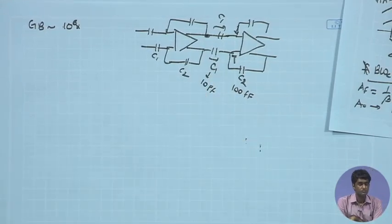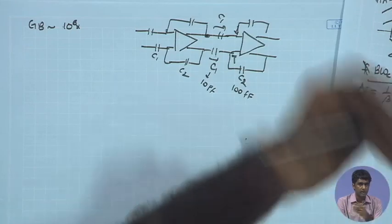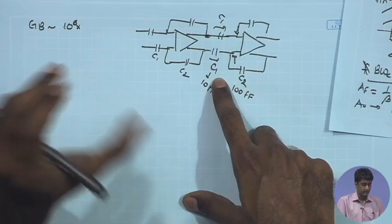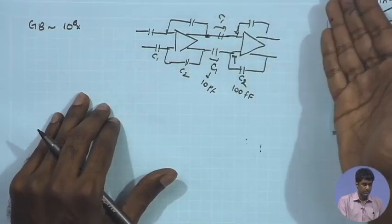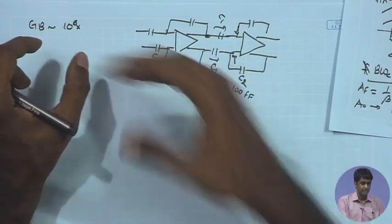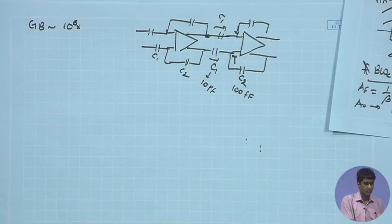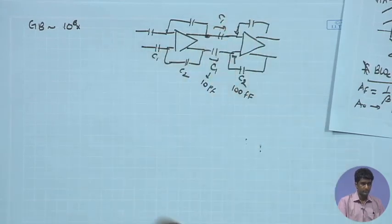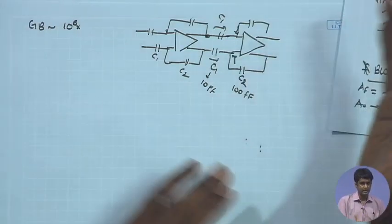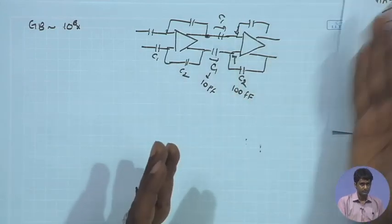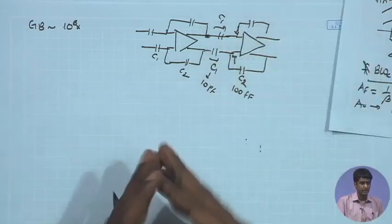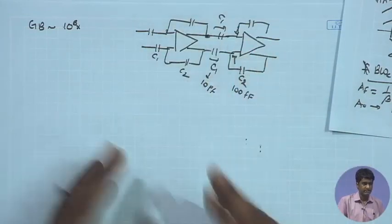The open-loop bandwidth depends on the dominant pole p_1, which is set by the compensation capacitor C_c and the second-stage gain, not directly by the load capacitance. For a given phase margin, a certain ratio between C_c and C_L is required. The open-loop 3 dB cutoff frequency is determined by C_c times the second-stage output resistance r_o, giving the RC time constant of the first stage.